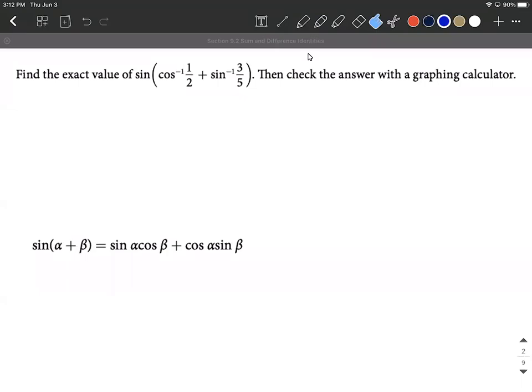Okay, when you take a look at this problem, we're trying to evaluate, find the exact value of sine, and then on the inside of our sine function, we have cosine inverse of one-half plus sine inverse of three-fifths. This looks intimidating when you first get going on it. No joke about that, but what I do notice is we have two things that are added together inside of the sine function. So I went ahead and brought up our sum identity for sine.